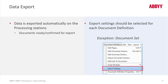The processing station is responsible for performing the data exports — it's an automatic step. We set up the exports, and you can have more than one, in the document definition. The document definition menu and its properties allow you to specify export settings right there.